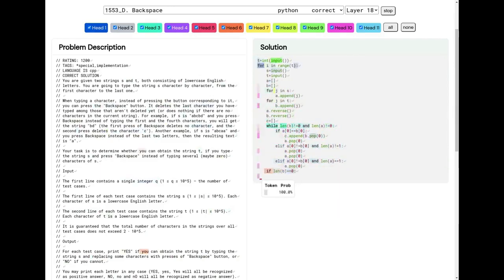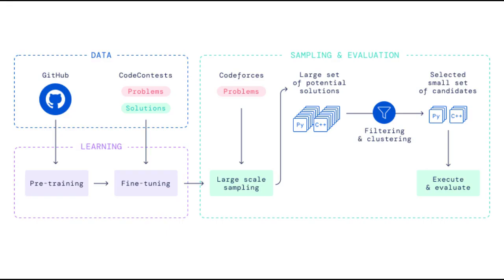The problem-solving abilities required to excel at these competitions are beyond the capabilities of existing AI systems. However, by combining advances in large-scale transformer models that have recently shown promising abilities to generate code with large-scale sampling and filtering, DeepMind researchers made significant progress in the number of problems they can solve.